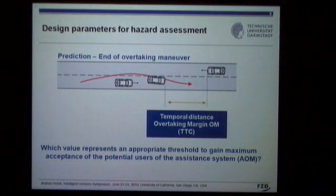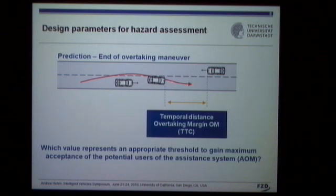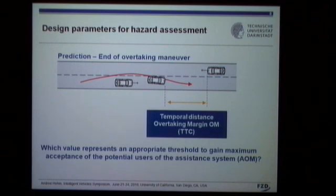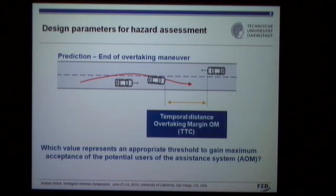Now let's take a closer look at how the system decides whether to warn the driver or not. As already stated, the system makes a prediction about the overtaking progress. By doing this, a prediction is also possible about a central value called the overtaking margin (OM), which represents a temporal distance similar to a time-to-collision (TTC). That temporal distance is the TTC-like value of the overtaking car to the oncoming car at the end of the overtaking maneuver, identified by the complete re-entrance of the overtaking car into its own lane. This value is a safety parameter: when it is low, the situation becomes more dangerous.